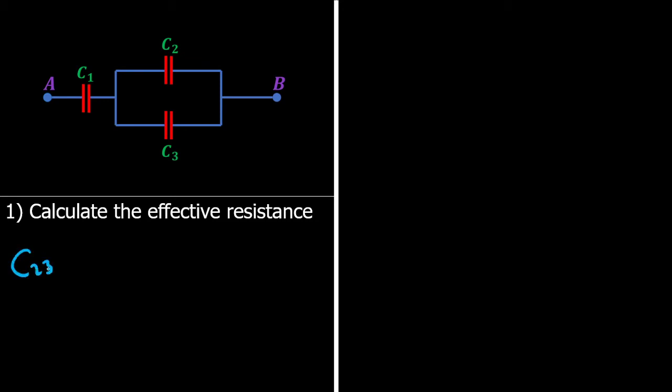I'm going to call it C2-3. So if you have parallel, you're going to add them together, and what you will have is 12 plus 12, that is 24 microfarads. That is as simple as it gets.